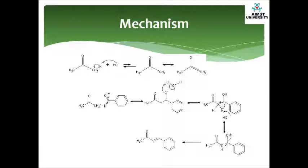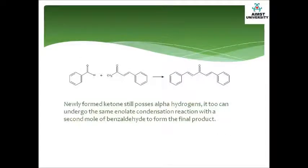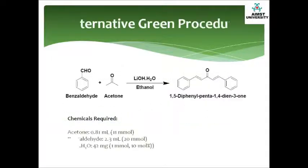Note that in this reaction the intermediate alcohol is dehydrated under basic conditions, unlike most alcohol dehydrations which generally follow an E1 or E2 mechanism under acidic conditions. The E1CB mechanism is made possible by the presence of carbonyls, which stabilize the intermediate carbanion. The newly formed ketone still possesses alpha hydrogens, so it too can undergo the same enolate condensation reaction with a second mole of benzaldehyde to form the final product, dibenzylideneacetone.